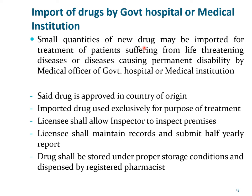Small quantities of a drug may be imported for treatment of patients suffering from life-threatening diseases or diseases causing permanent disability by the medical officer of government hospitals or medical institutions. Such a drug must be approved in the country of its origin, and must be used exclusively for treatment of the patient for that condition. The government hospital should allow the inspector to inspect their premises, maintain records, submit half-yearly reports, and ensure the drug is stored under proper conditions and dispensed by a registered pharmacist.